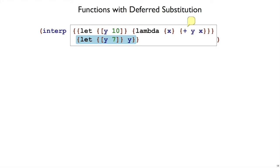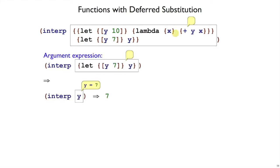Let's look at the argument evaluation first, because that's easy. When we interp let y be 7 in y, then we start out with no substitution still, then let takes the 7 and maps it to y in the environment, and that way when we interp y, we get a 7 out.